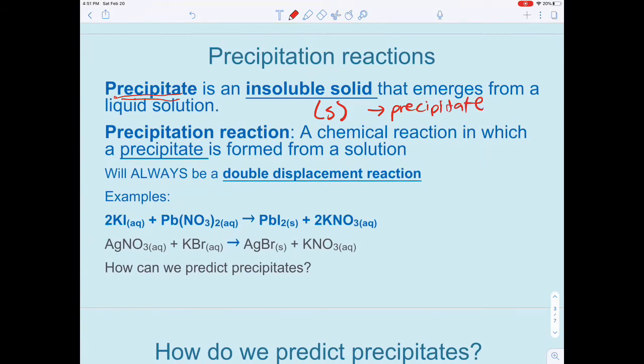In a precipitation reaction, we form a precipitate, and these are always going to be double displacement reactions. The easiest way to solve these is to switch the metals around. Basically, the two metals will switch places, as you can see in these two reactions.